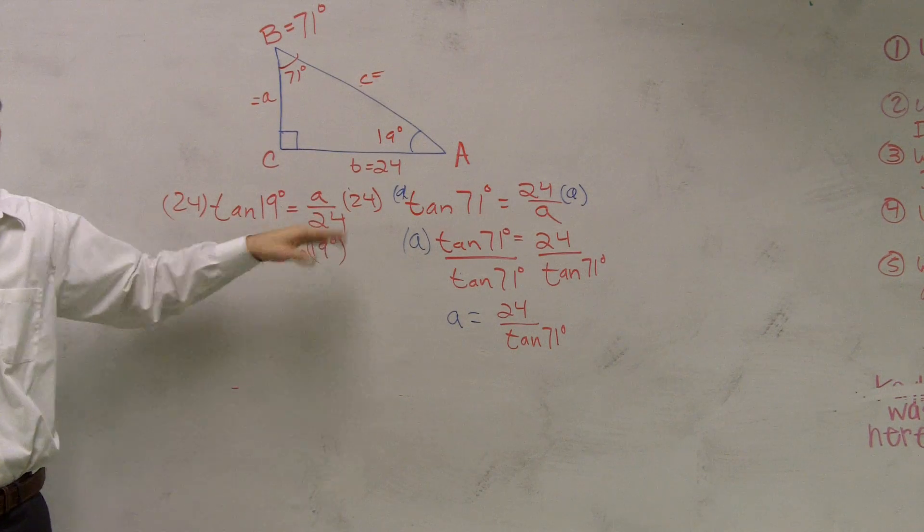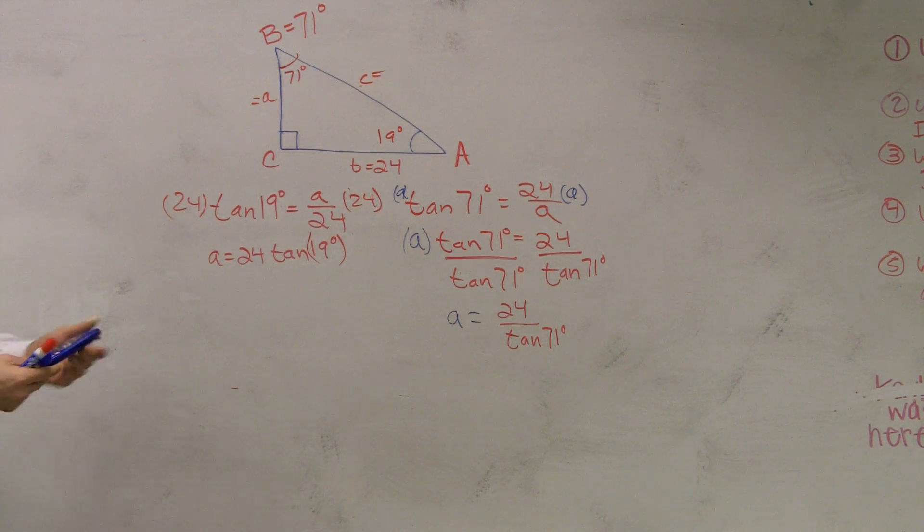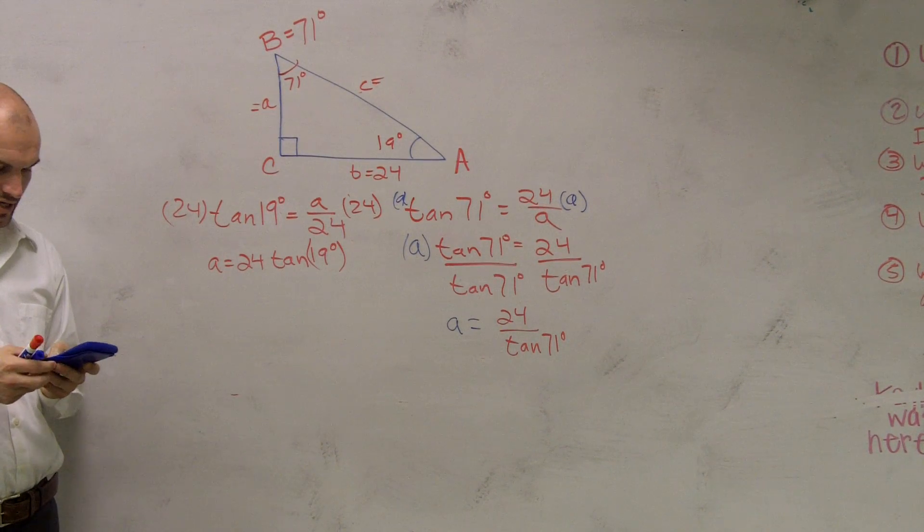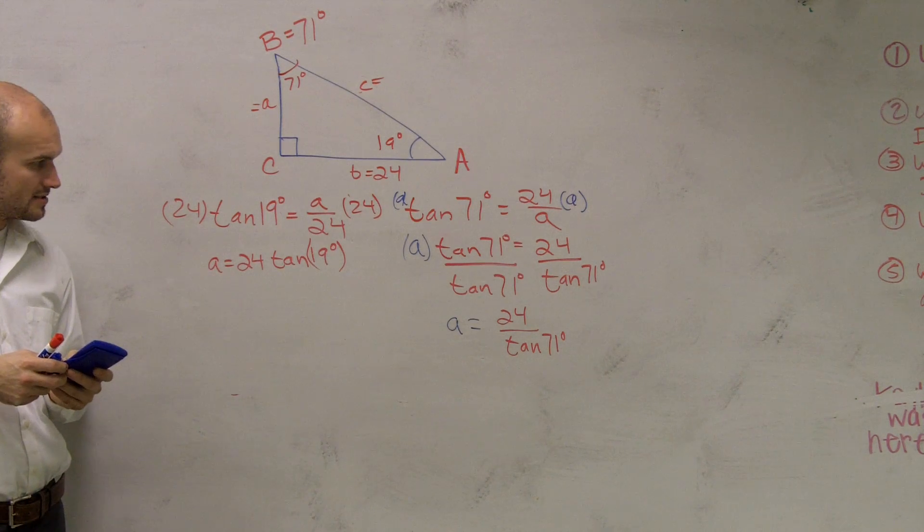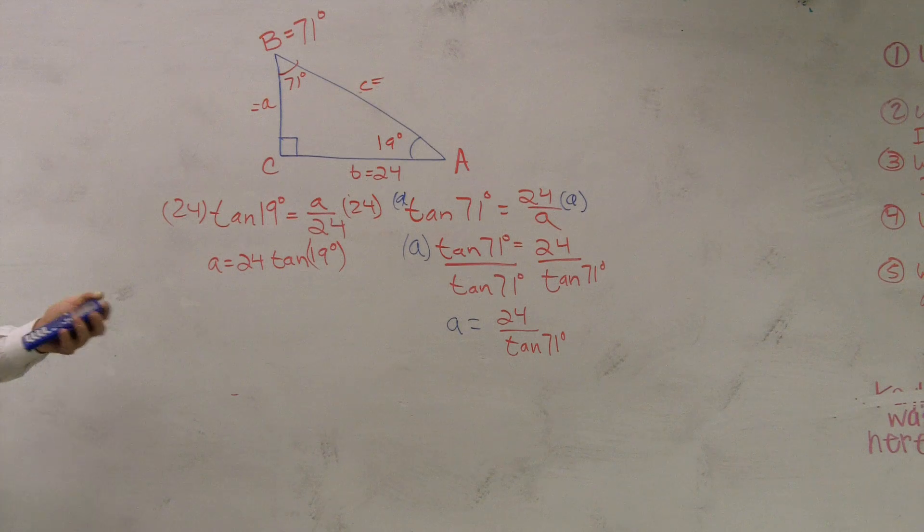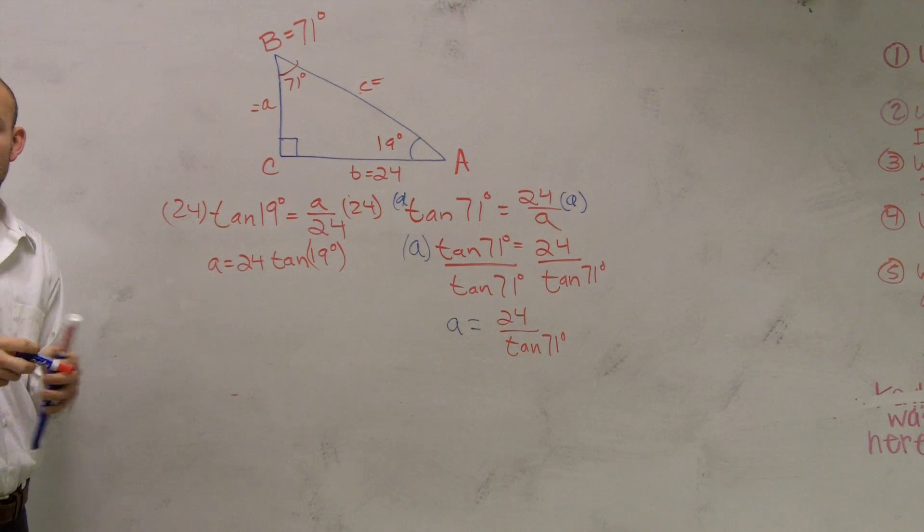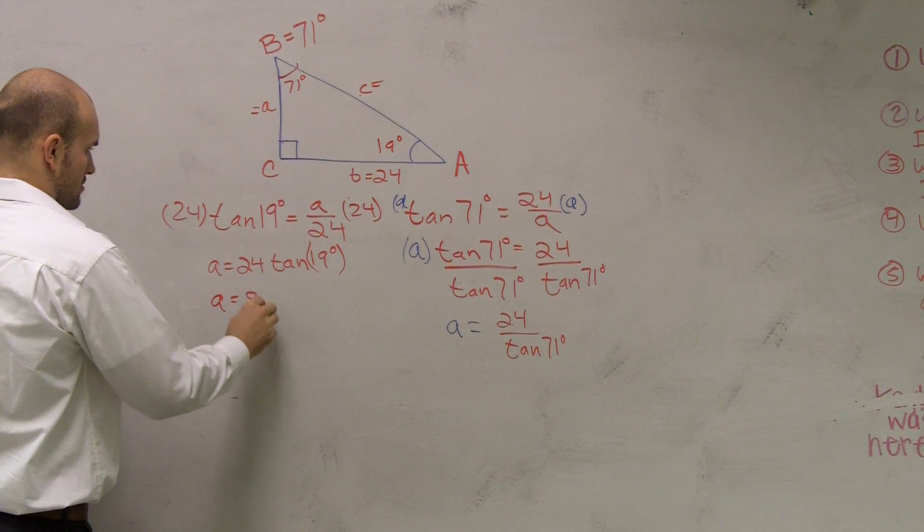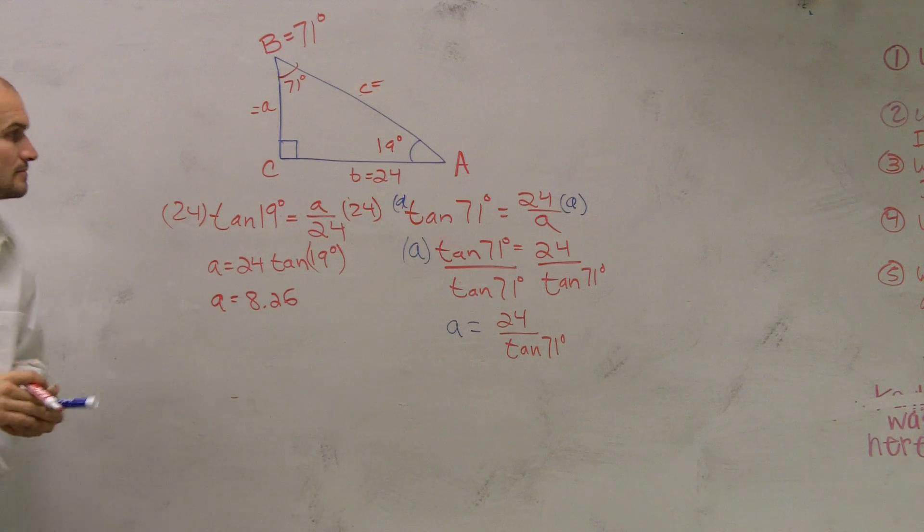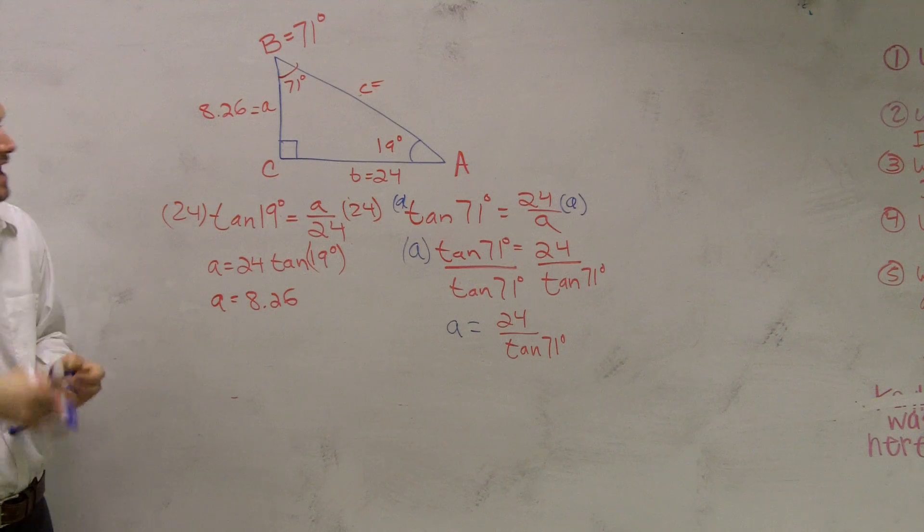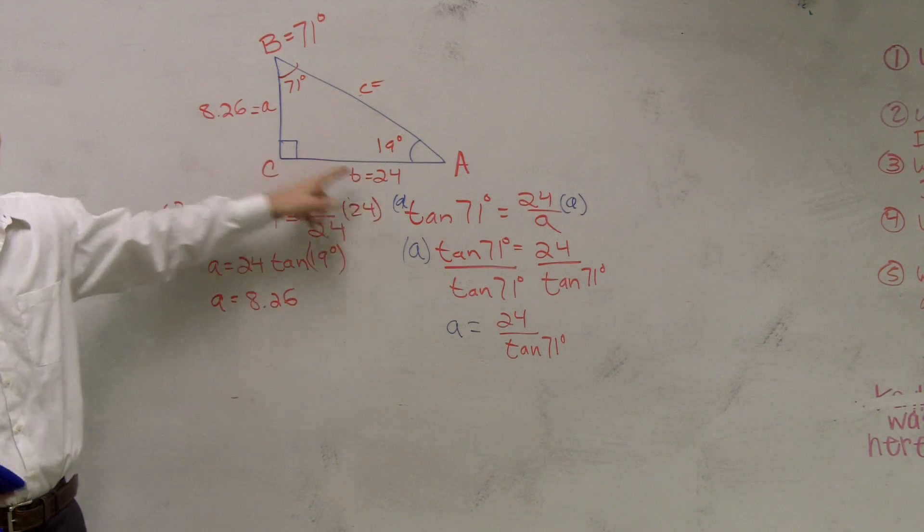So if you guys notice, when you plug these in, you're going to get the exact same answer. Which here I get 24 times tangent of 19 degrees. I'm getting 8.26 rounded. Anybody else? I got 8.26. OK, so therefore, if I have 8.26 rounded. So ladies and gentlemen, now, guess what? I have all the angles, and I have two legs in my triangle.